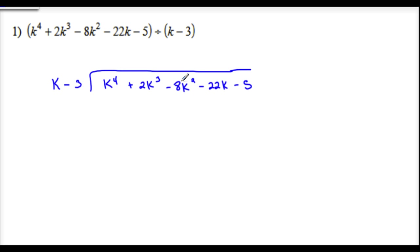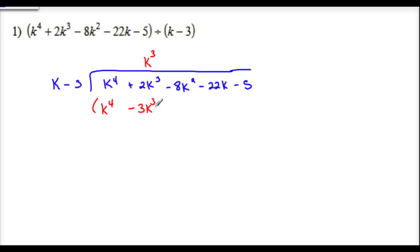If it doesn't go in descending order, I'm going to show you a technique that will help you find it — we'll make it in descending order. You can always change the order around, or if you need to put in something called a filler, then we'll call it a filler. We'll show you in a second. So k into k to the fourth goes in there how many times? k times k to the third power. So k times k cubed is k to the fourth. Negative 3 times k cubed is negative 3k cubed, and subtract.